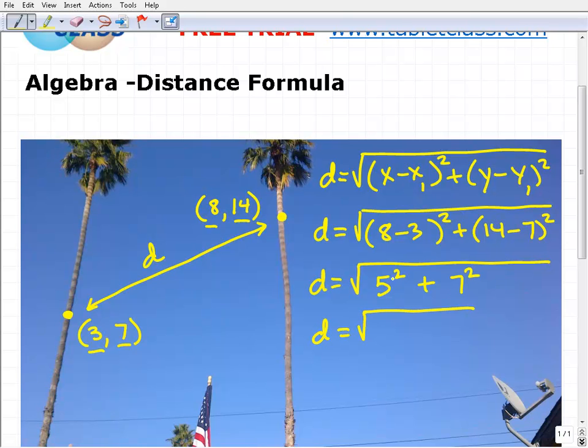So the distance is going to be the square root of 5 squared, which is 25, plus 7 squared, which is 49. We're going to add 49 plus 25, and that is 74. So the distance is going to be the square root of 74.